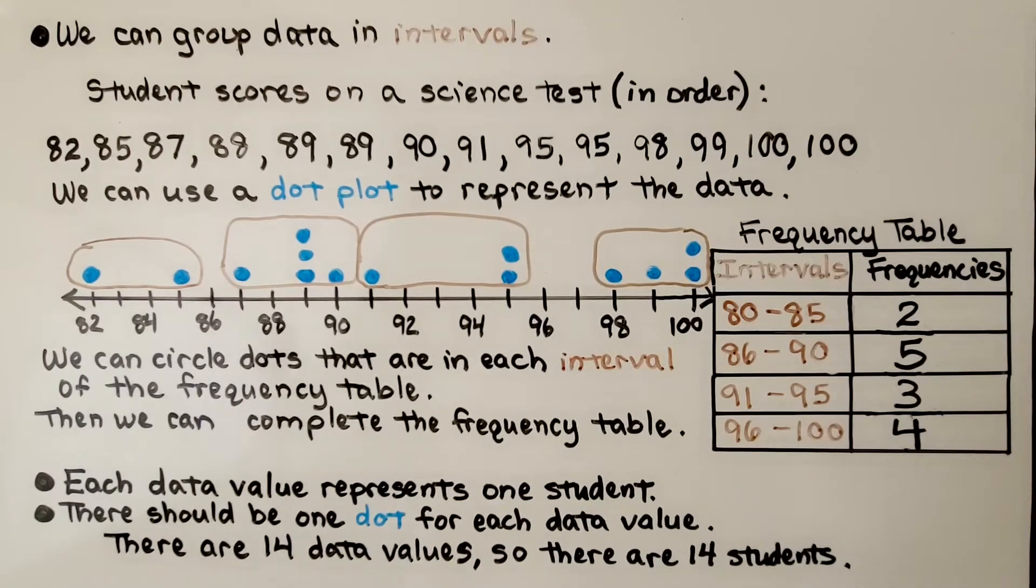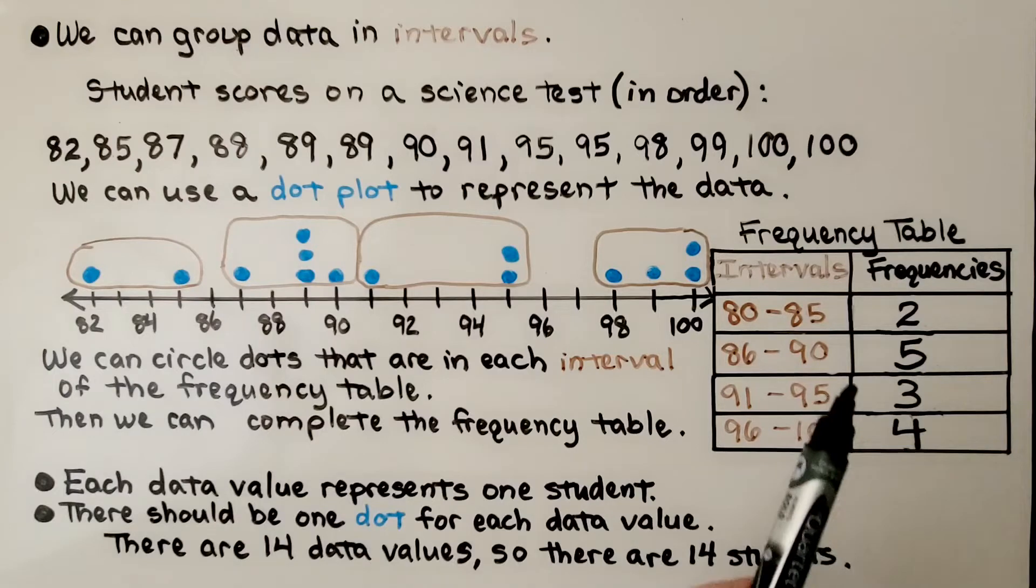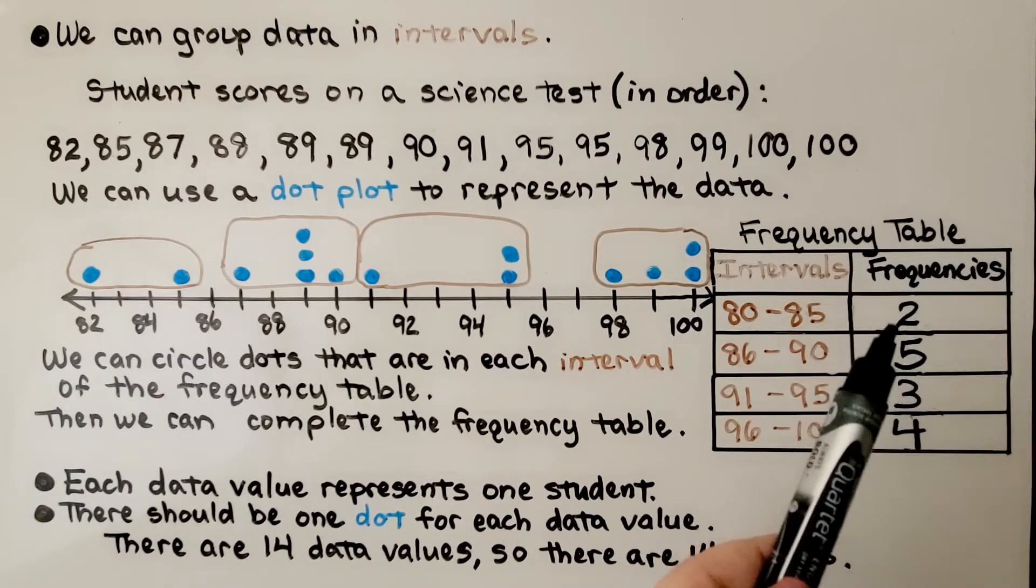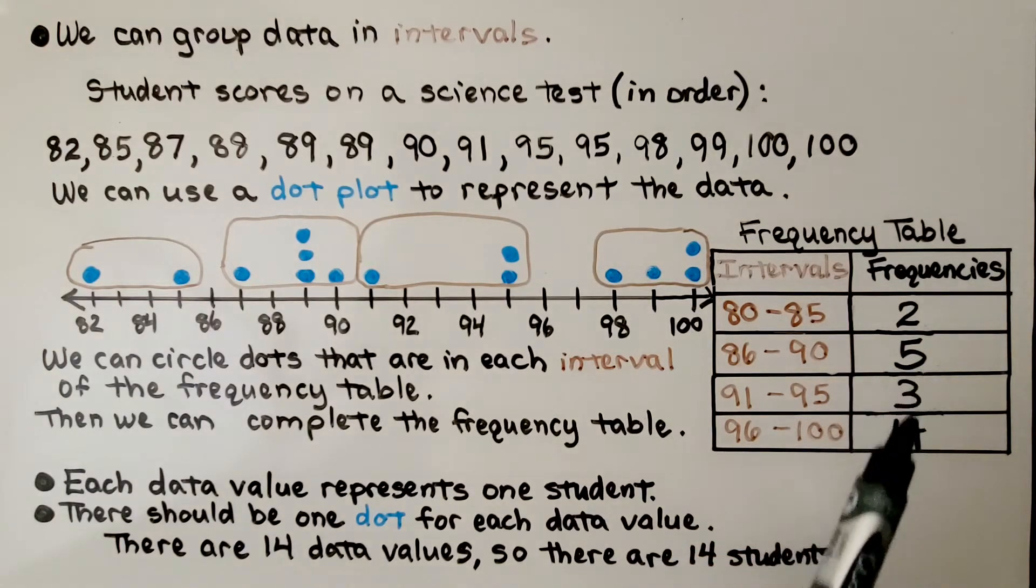Each data value represents one student. There should be one dot for each data value. We can add up the frequency here. We have 2 and 5 is 7, and 3 and 4 is 7. We have 14. There are 14 data values, so there are 14 students, 14 scores.